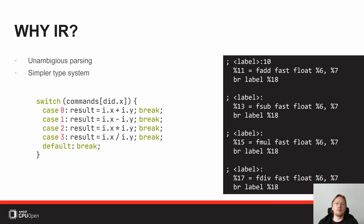Why is there an intermediate representation in the first place? Imagine there is something like a switch statement with a break — in simple C it's probably clear where the break goes. But imagine you have a switch nested in a switch, or a switch nested in a for, and you write a break: you have to look up whether this is breaking from the innermost or outermost scope. It's not entirely clear just looking at the source code.